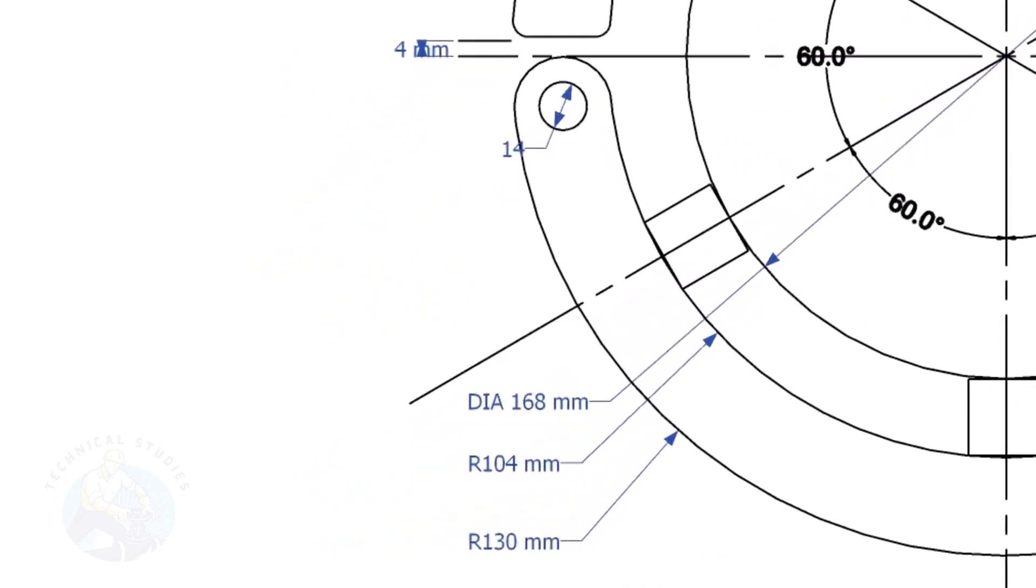Draw another circle, the radius shall be 20 millimeters more than the previous circle. This circle is the inside diameter of the clamp.